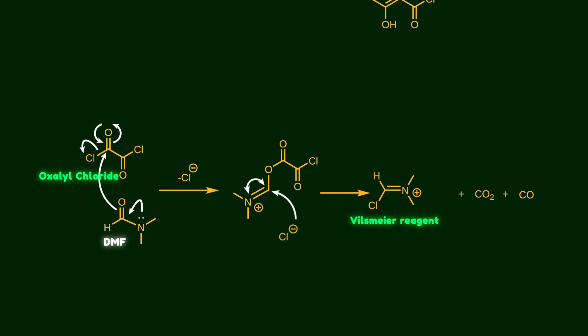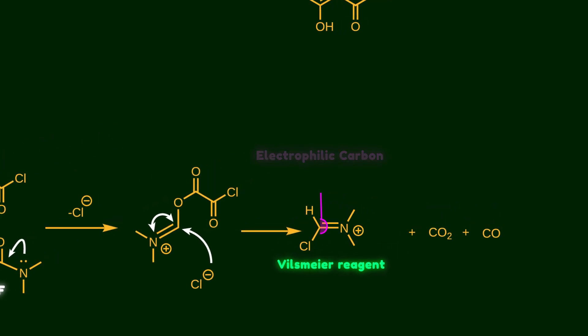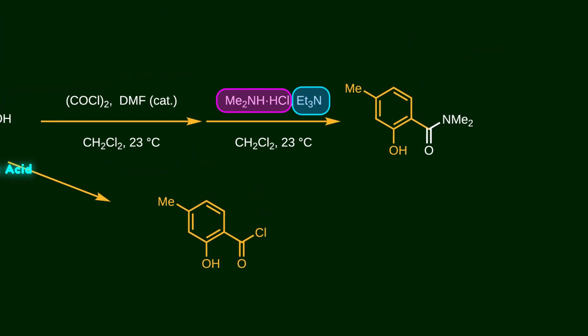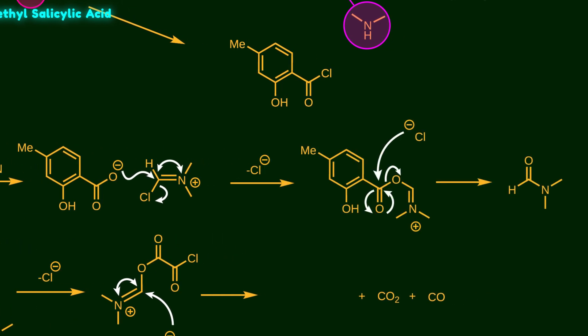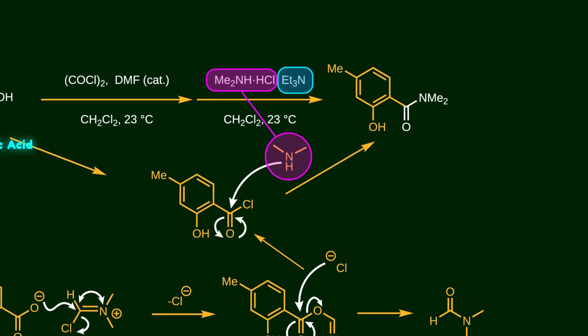The non-bonding electrons on the nitrogen atom in DMF trigger the attack of oxygen on oxalyl chloride, kicking off a chloride anion. Next, the carboxylate ion attacks the iminium ion, releasing carbon dioxide and carbon monoxide and generating the Vilsmeier reagent, which contains an electrophilic carbon atom. Dimethylamine and triethylamine are then added — triethylamine acts as a base, deprotonating the masked dimethylamine salt and the carboxylic acid. As a result, the nucleophilic carboxylate attacks the electrophilic Vilsmeier reagent, kicking off chloride. That chloride attacks the carbonyl group and regenerates DMF through an addition-elimination mechanism, leaving us with the acyl chloride. Finally, dimethylamine attacks the acyl chloride to produce the desired amide. This strategy is effective because it's carried out near room temperature.